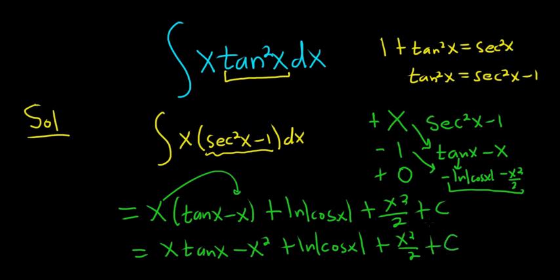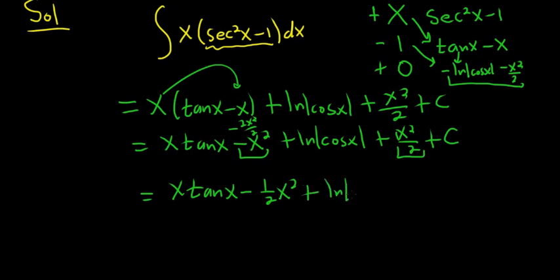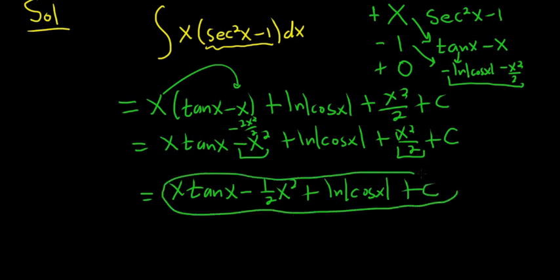And we can combine like terms now. So you can think of this as negative 2x squared over 2. And here you have 1x squared over 2. So that'll give you x tan x minus 1 half x squared, by combining this and this, plus the natural log of the absolute value of cosine x, plus c. And that is the final answer.